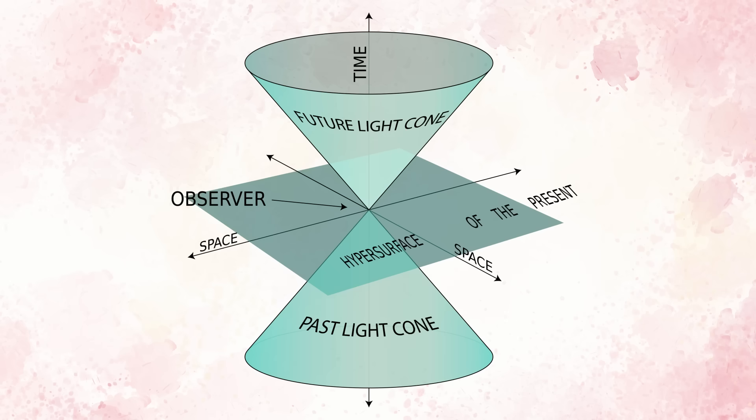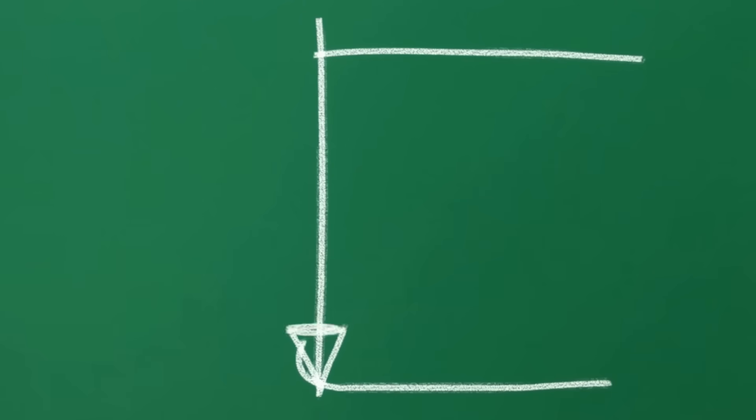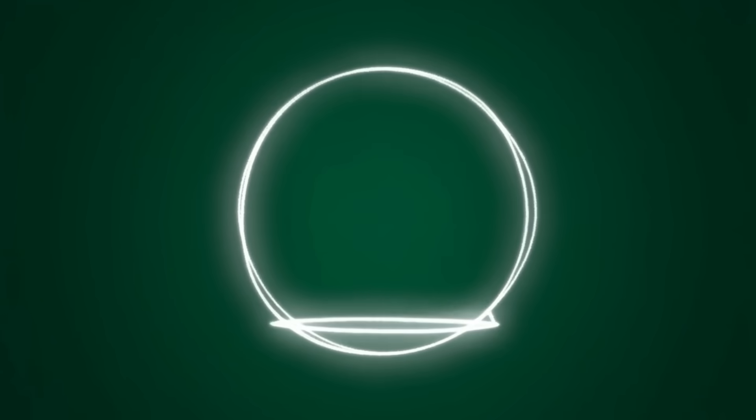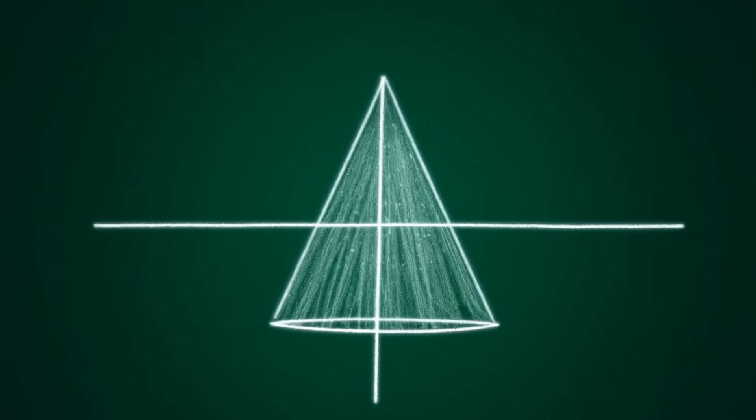We can visualize this with a light cone. Imagine a star exploding. The light from that blast spreads out in a sphere. If we graph this on a spacetime diagram with time going up and space going across, that expanding sphere of light forms a cone. The surface of this cone represents the path of all the photons from that explosion. It is the boundary of causality. Anything inside the future light cone can be affected by the explosion. Anything outside, it cannot. The photon itself travels along the very edge of this cone, defining the absolute limit of cause and effect. It's the messenger that weaves the cosmos together.